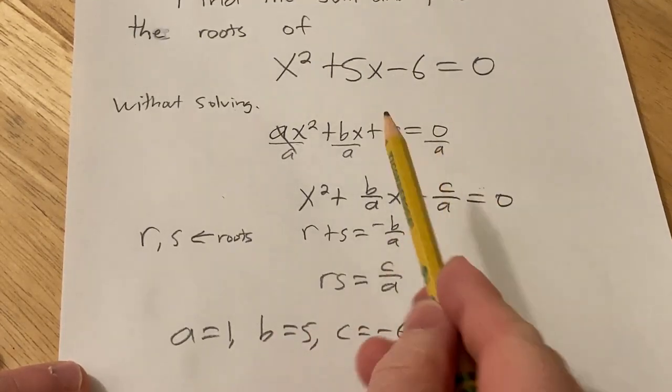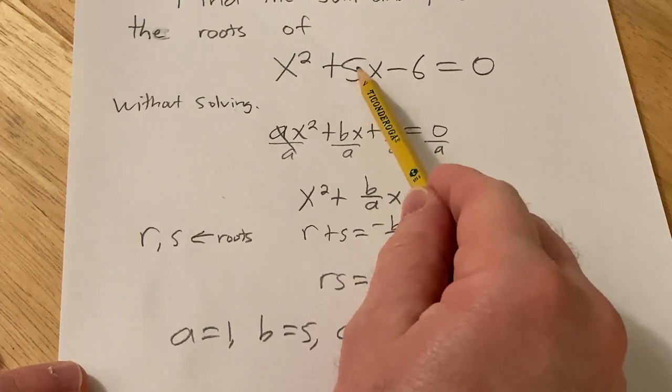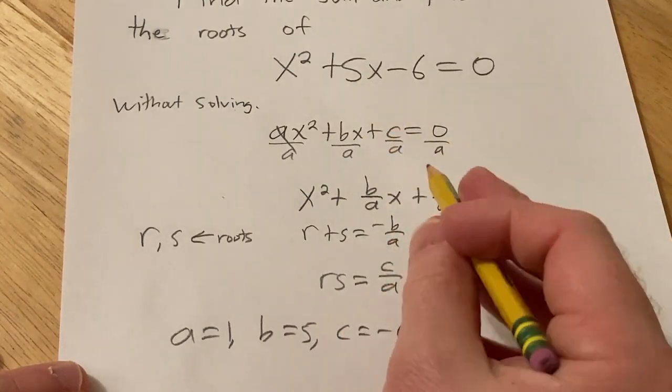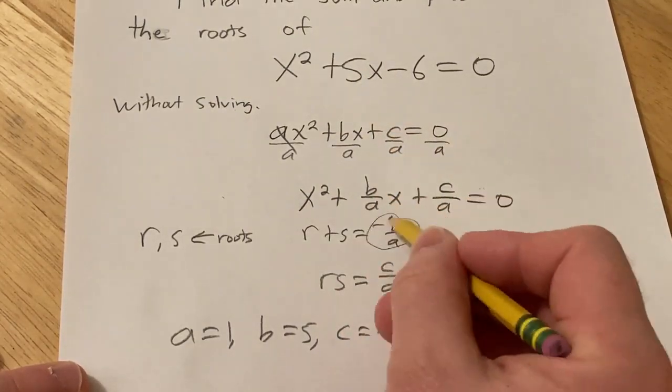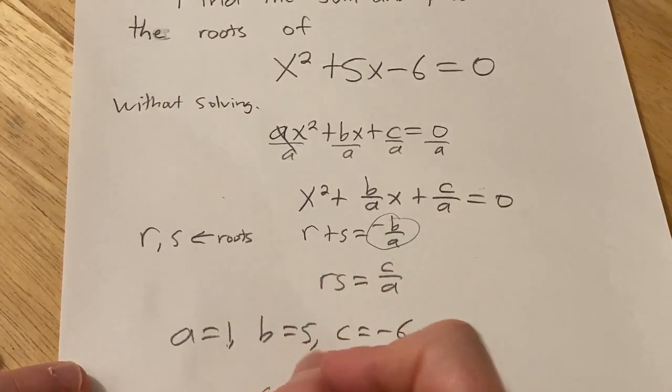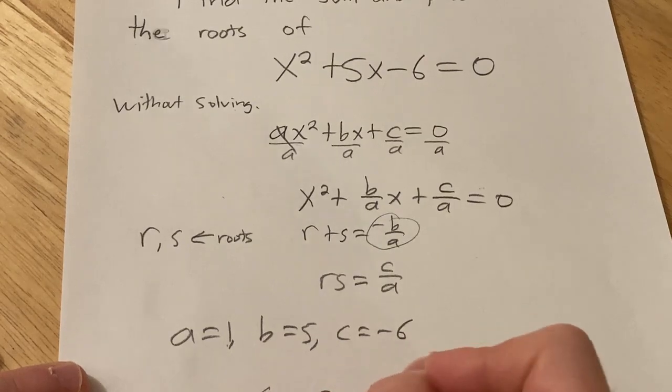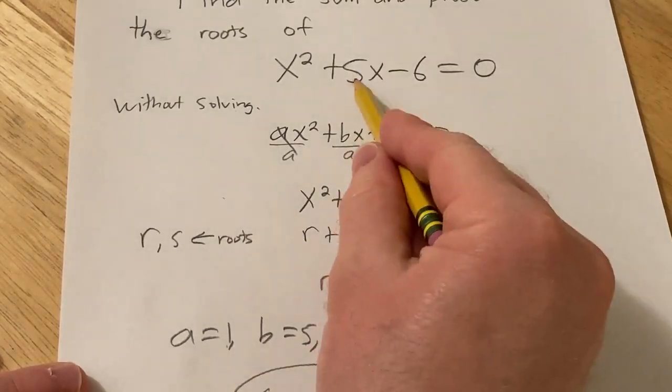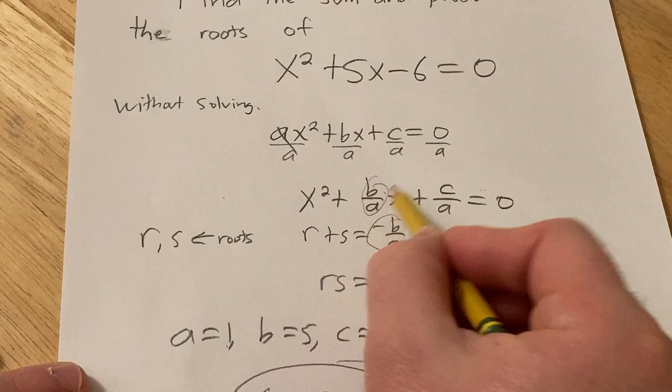So basically you just look at this, you see that the sum of the roots is 5, or rather negative 5, because it's negative b over a, so it'd be negative 5 over 1. So the sum is negative 5, it's just the opposite of this, because it's negative this,